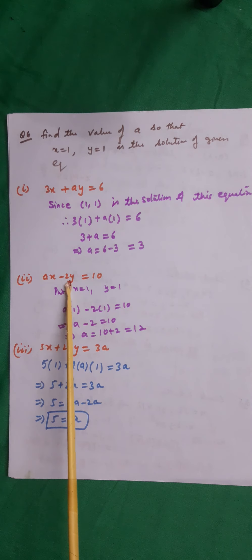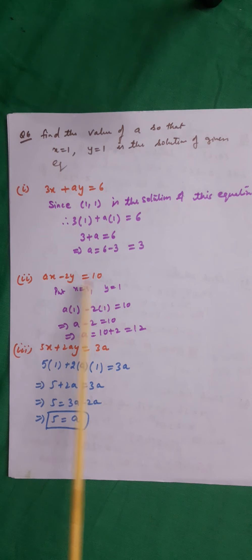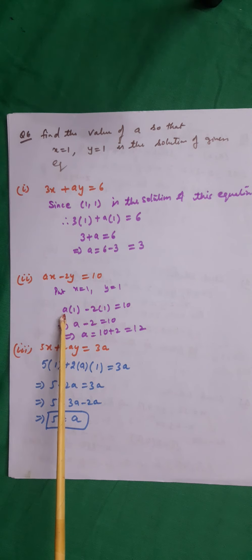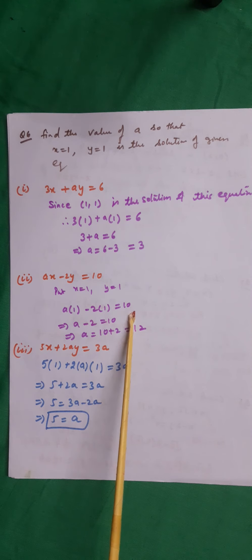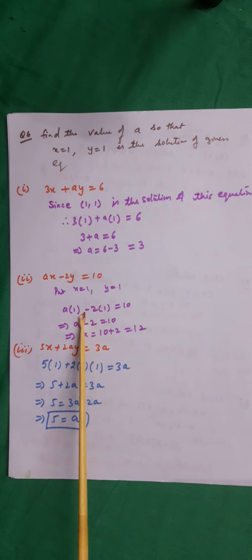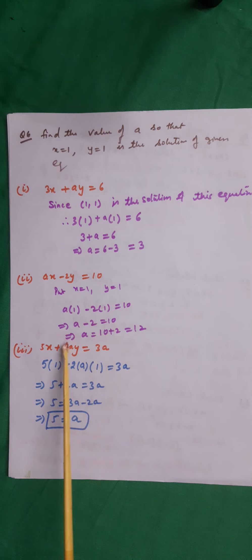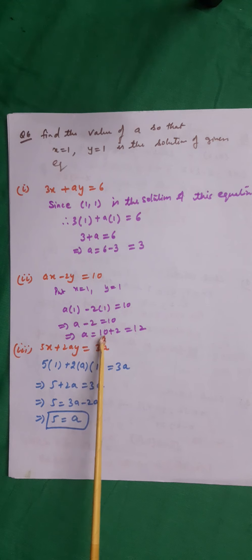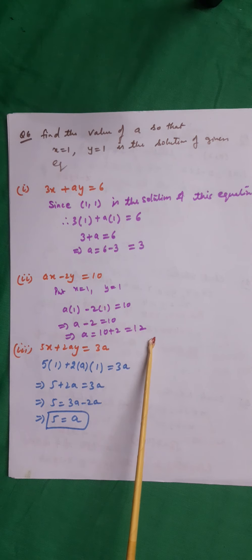Next: ax minus 2y equals 10. Again put x equal to 1 and y equal to 1. The equation becomes a into 1 minus 2 into 1 equals 10, which gives a minus 2 equals 10, so a equals 12.